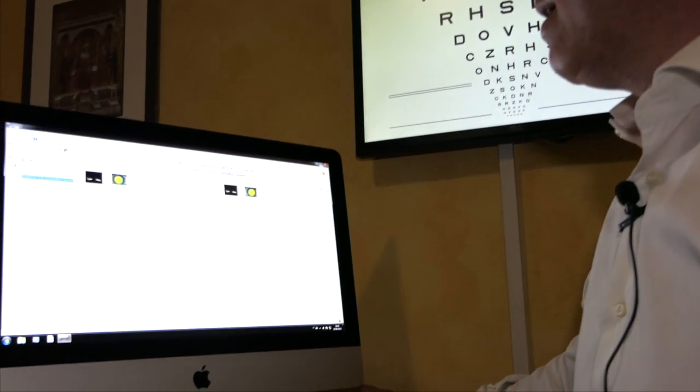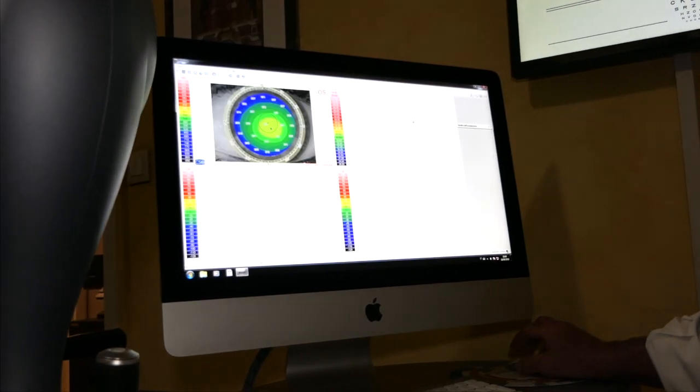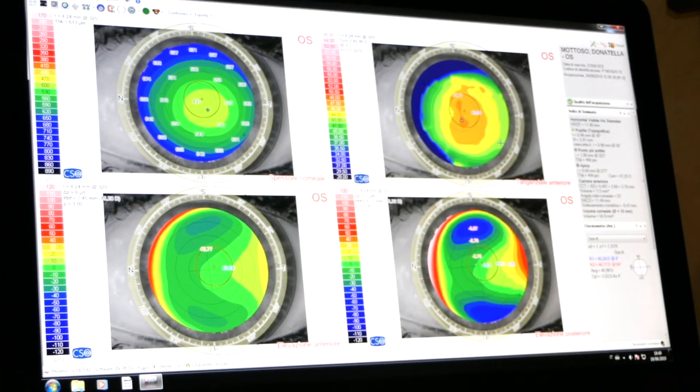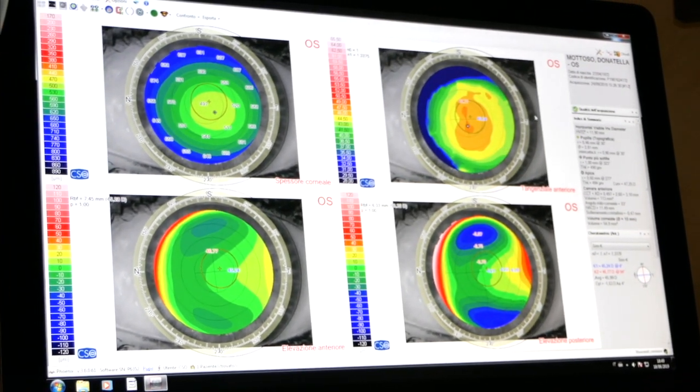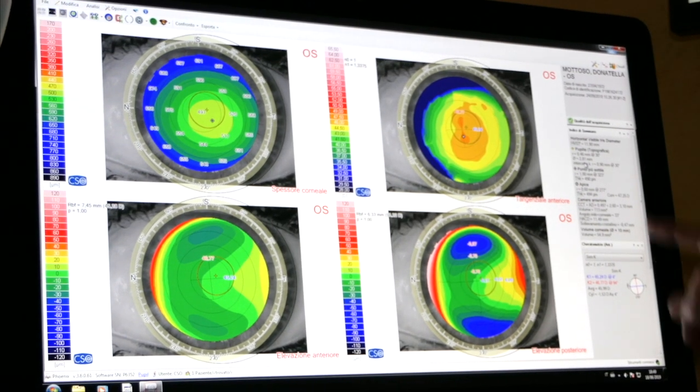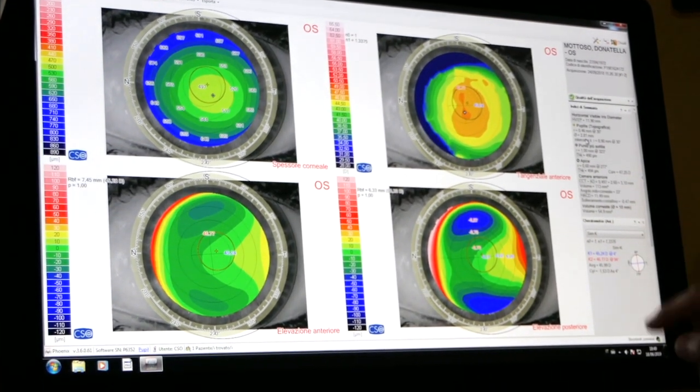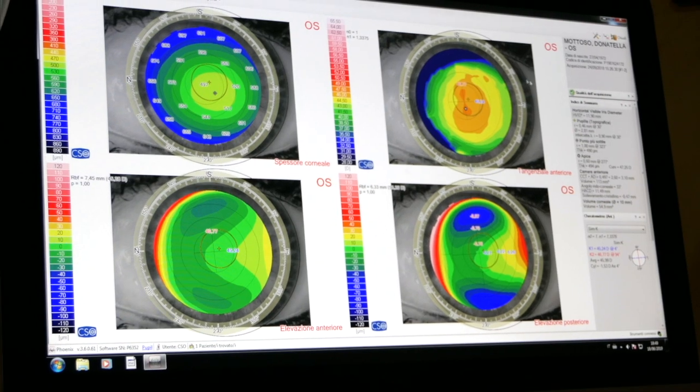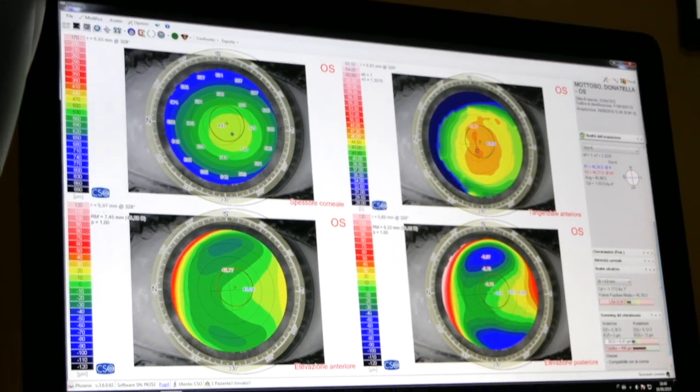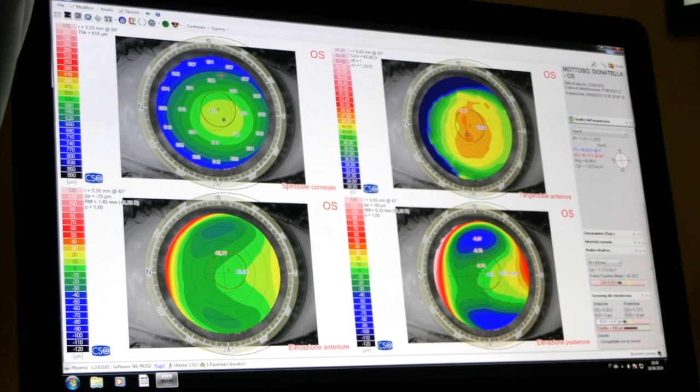A screen appears with a series of numerical values which the ophthalmologist must know how to read and interpret, and it is a real map of colors. This color map represents the surface of the cornea, and we can select a whole series of parameters.